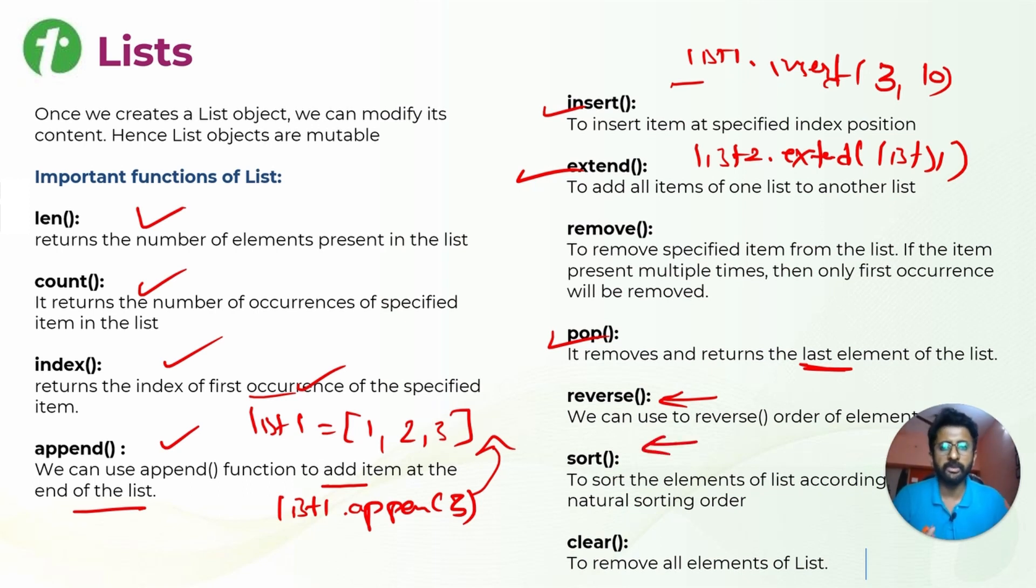Reverse will directly reverse the order of elements. Sort will sort the list. For example, you have a list of one, five, seven, and nine, and then we have eight, three - whenever you are doing list.sort, it will just sort it out in one, three, five, seven, and so on. Sort function is used. And clear is used to remove all elements from the list.